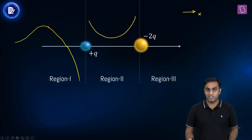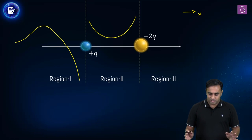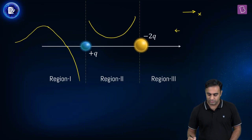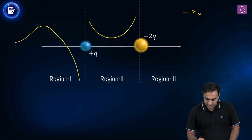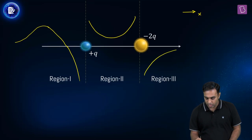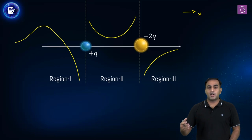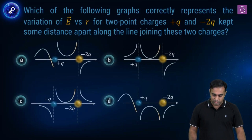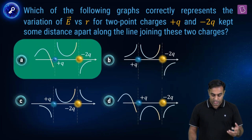Region three, beyond minus 2Q, is simple to analyze. The field due to minus 2Q always dominates and points toward the negative charge. The field starts with a higher magnitude and decreases to zero only at infinity. Looking at the options, the variation we predicted matches option A.